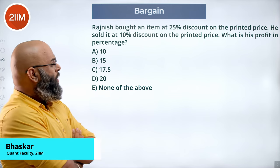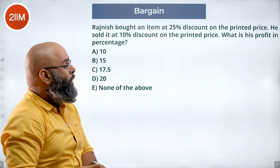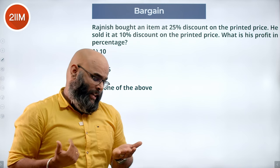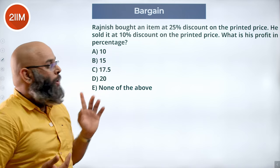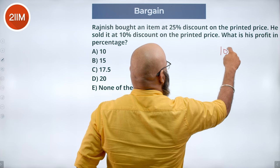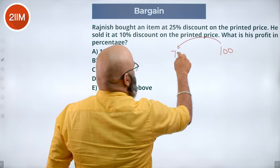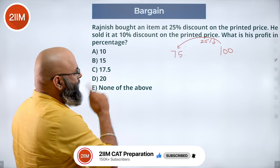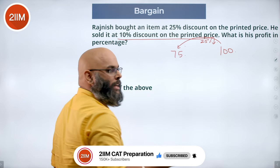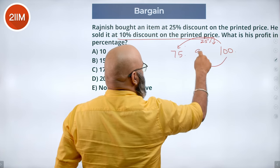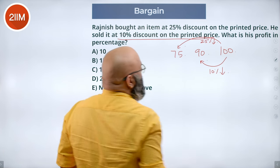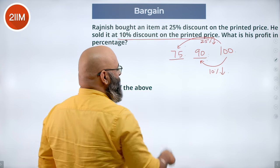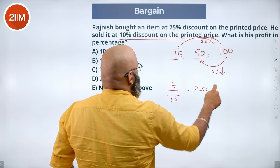Rajneesh bought an item at 25% discount on the printed price. He sold it at 10% discount on the printed price. What is his profit percentage? Taking the printed price as 100, a 25% reduction gives a cost price of 75. He sells at a 10% discount from 100, so the selling price is 90. The profit is 15 on a cost of 75, which is 20% profit.